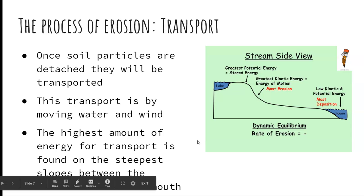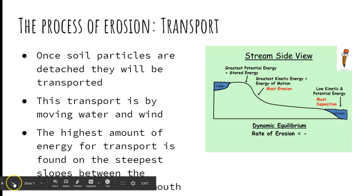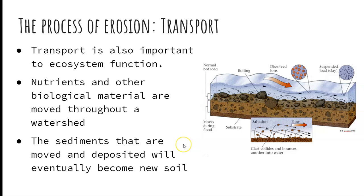The next thing that happens is transport, where soil particles and sediments are transported down through the stream. You're going to have a lot of energy on the steeper slopes of the watershed and less energy further down. It's moved mainly by water in our watersheds, with a lot of energy on those steep slopes between the mouth and the headwaters. Transport is also an important ecosystem function — nutrients are moved along with sediments and can be delivered to different surfaces in the watershed.